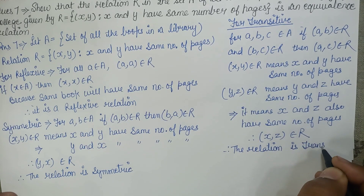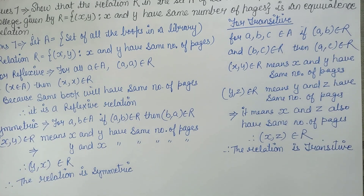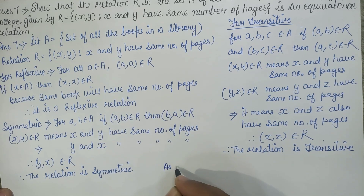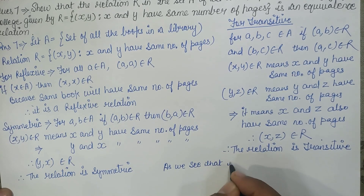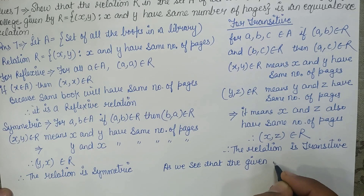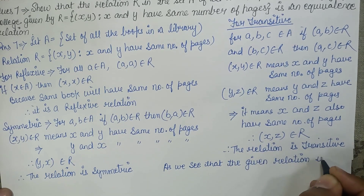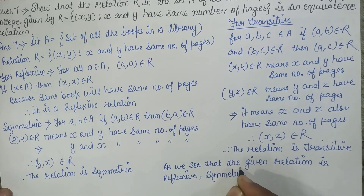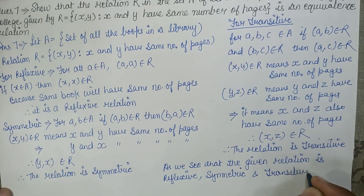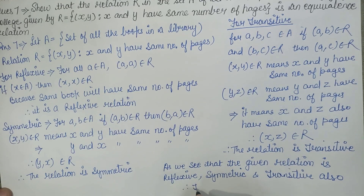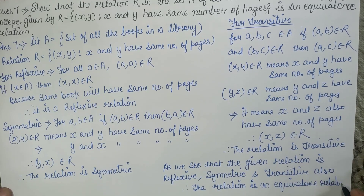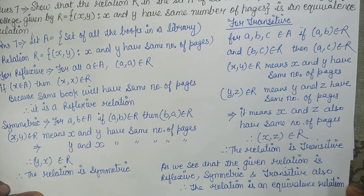The question asked whether this is an equivalence relation. An equivalence relation is one that is reflexive, symmetric, and transitive — all three. As we have seen, the given relation is reflexive, symmetric, and transitive. Therefore, the relation is an equivalence relation.